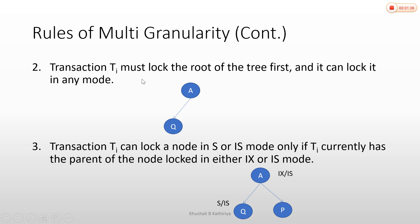The second rule: transaction TI must lock the root of the tree first, and then it can lock any other node. When you lock the root node, you will have access and can then lock the root node.